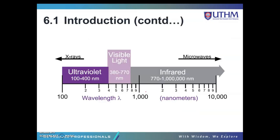Light has three types: ultraviolet, visible light, and infrared light. The first is ultraviolet. Ultraviolet radiation covers the wavelength range of 100 to 400 nanometers, which is higher frequency and lower wavelengths than visible light. Ultraviolet radiation comes naturally from the sun, but it can also be created by artificial sources, and it is used in industry, commerce, and recreation.